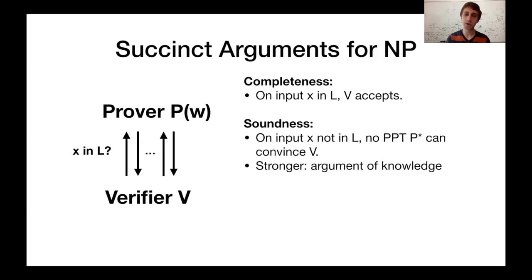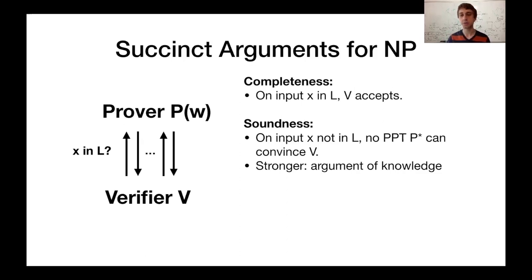In this work, we'll actually consider a stronger notion, which is that of argument of knowledge, which says if the prover can convince the verifier, then it must know a witness. You can formalize this using an extractor, but this won't be the focus of the talk today. Just know that this is the notion we're using and requiring in this work.